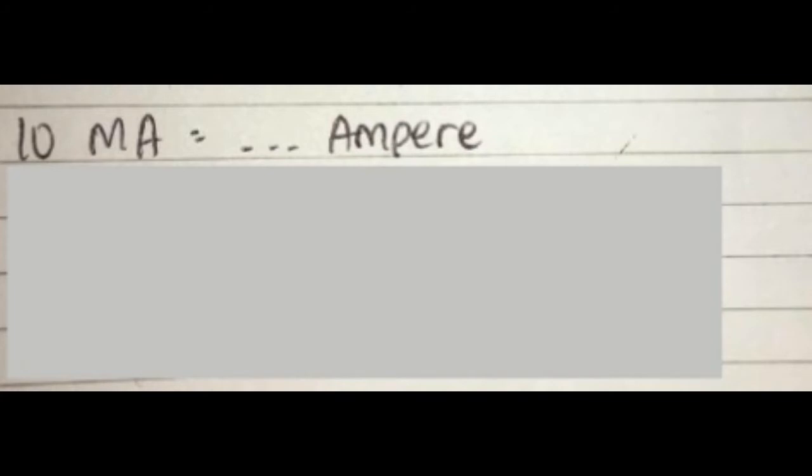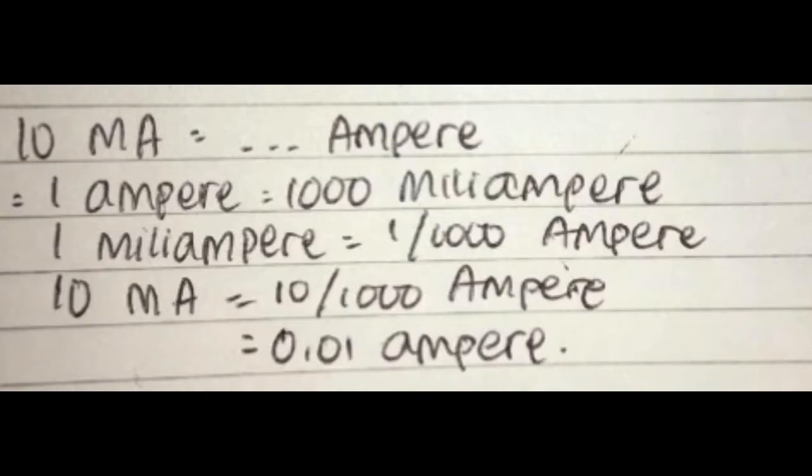Soal 9: 10 mA sama dengan berapa ampere? Jawaban: 1 ampere sama dengan 1000 miliampere. 1 miliampere sama dengan 1 per 1000 ampere. Maka 10 mA sama dengan 10 per 1000 ampere sama dengan 0,01 ampere.